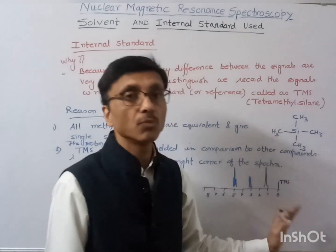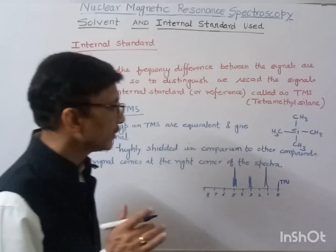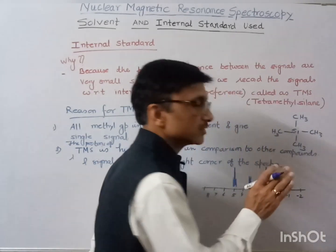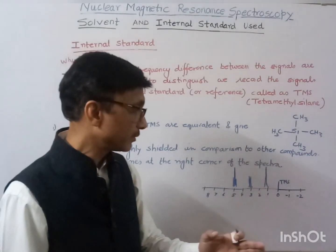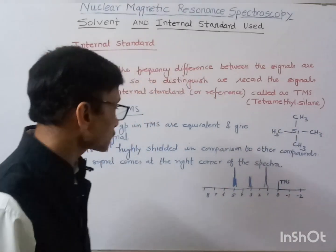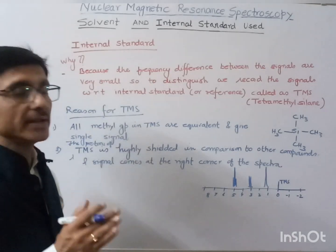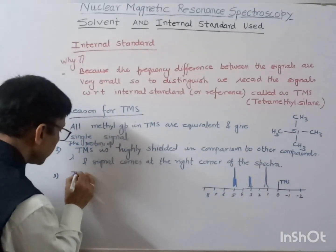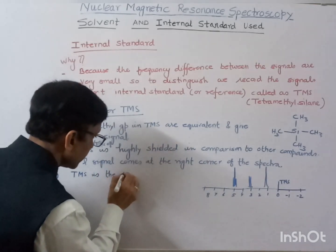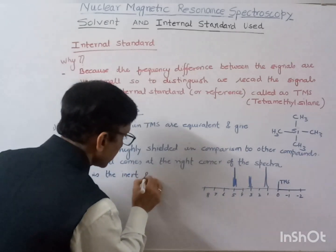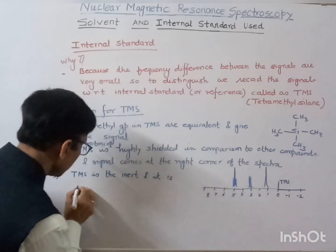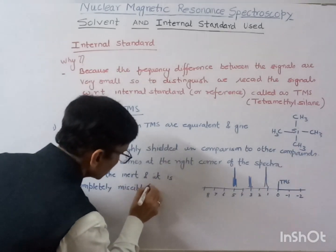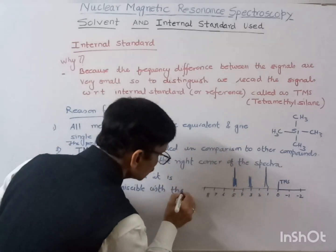So TMS is the most shielded. There are very few exceptions where we also find this signal at a negative value — I will discuss those compounds in my next lecture. Another reason TMS is used is that it is inert — it will not react with other compounds. Also, TMS is completely miscible with the solvents used to record the NMR spectra.